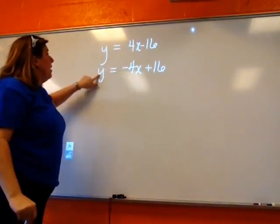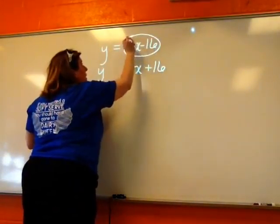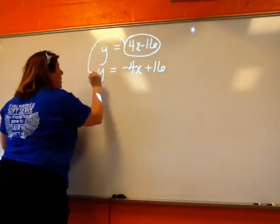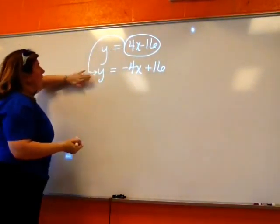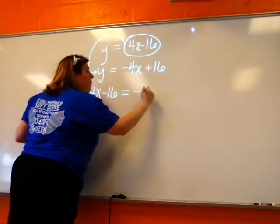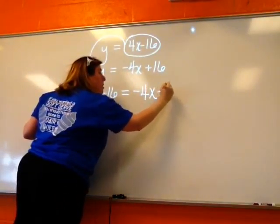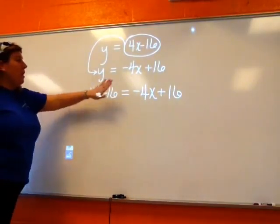It doesn't matter if I move this one down here or if I move this one up here. I'm going to take this one and I'm going to move it right there so that I'm going to take this whole thing and put it in where my Y is. So 4X minus 16 is now equal to negative 4X plus 16.